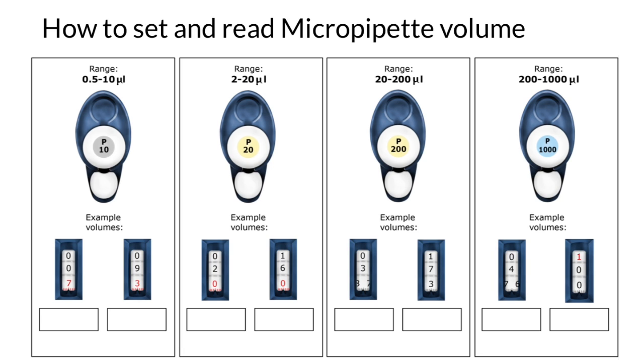First of all, you cannot use just one micropipette to take any volume you like. As you see, we have different micropipettes and P here stands for pipette. And the number below stands for the maximum volume we can work with this micropipette.